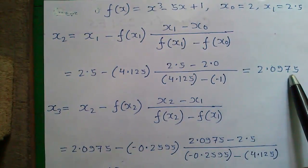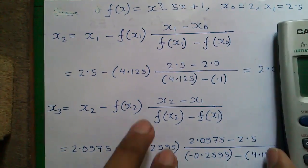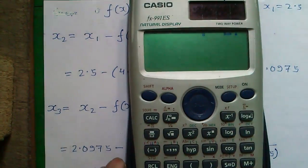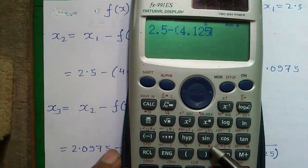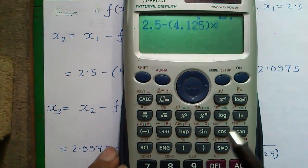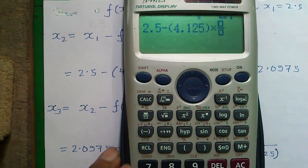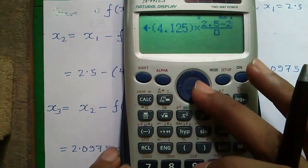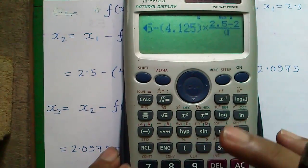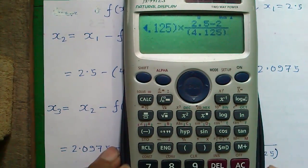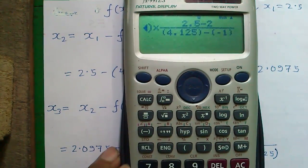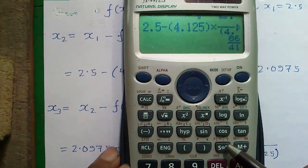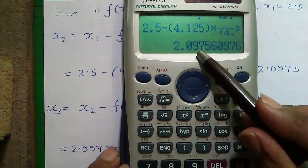So how to do this calculation on your calculator. I will tell you just enter the whole expression into the calculator. 2.5 - 4.125 × (press this button for a fraction) 2.5 - 2 / 4.125 - (-1) and press equals to. So you will get 2.0975.